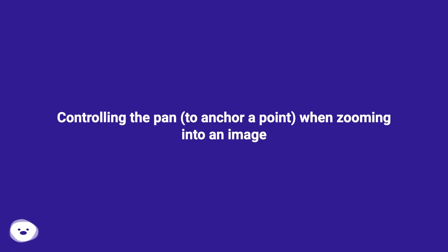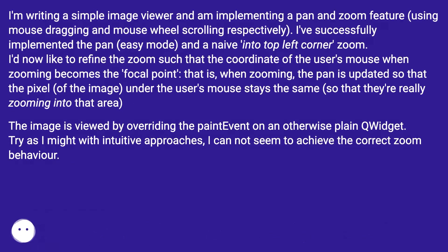Controlling the pan to anchor a point when zooming into an image. I'm writing a simple image viewer and am implementing a pan and zoom feature, using mouse dragging and mouse wheel scrolling respectively. I've successfully implemented the pan and a naive zoom into the top left corner. I'd now like to refine the zoom such that the coordinate of the user's mouse when zooming becomes the focal point — the pan is updated so that the pixel of the image under the user's mouse stays the same, so they're really zooming into that area.